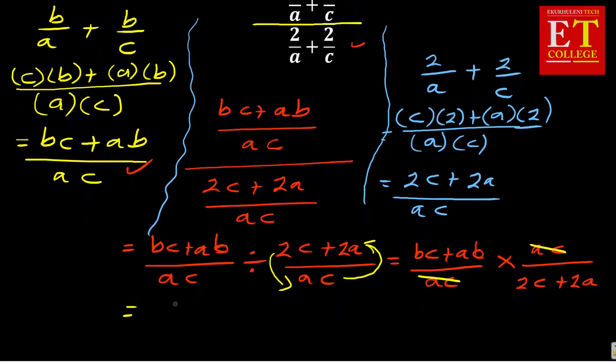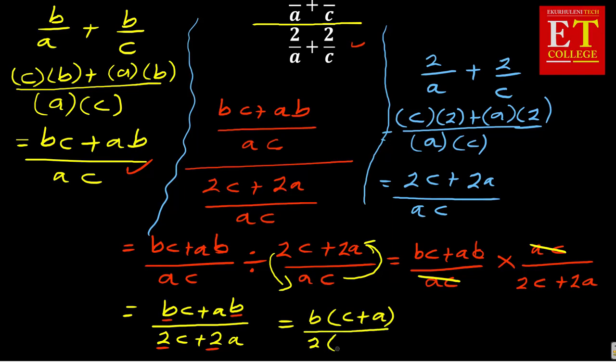What we are having is b c plus a b all over two c plus two a. Now, something interesting is you have got a b and a b, and you've got a two and a two. So we can factorize those. If I take out a b on top, I'll have c plus a all over, if I factorize my two at the bottom, I'll have c plus a. So you see the c plus a goes and the c plus a goes. And then the final answer in this case becomes b over two. So you needed to be careful so that you don't leave your answer not completely solved.